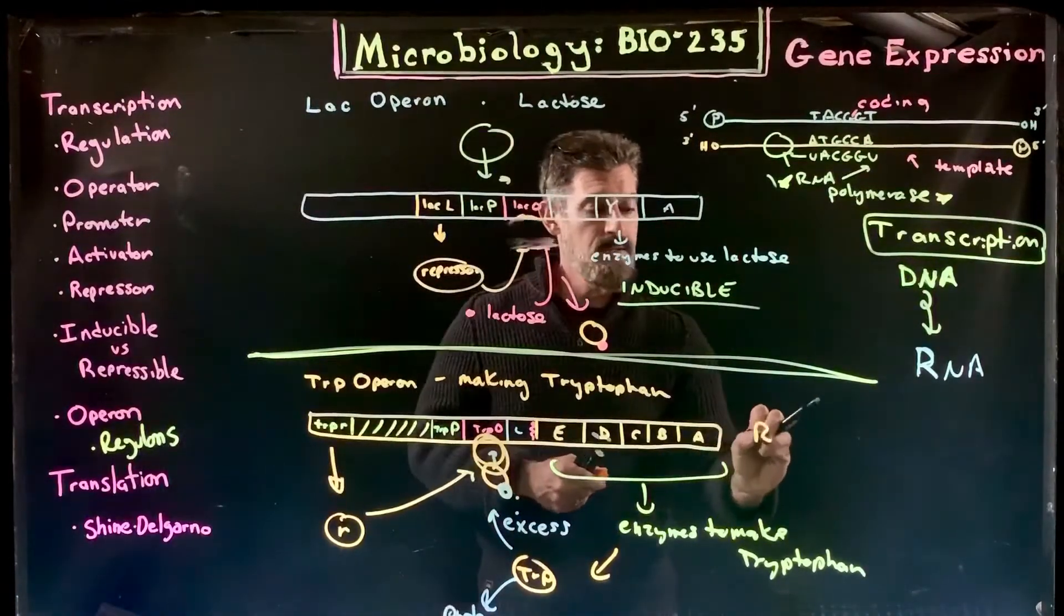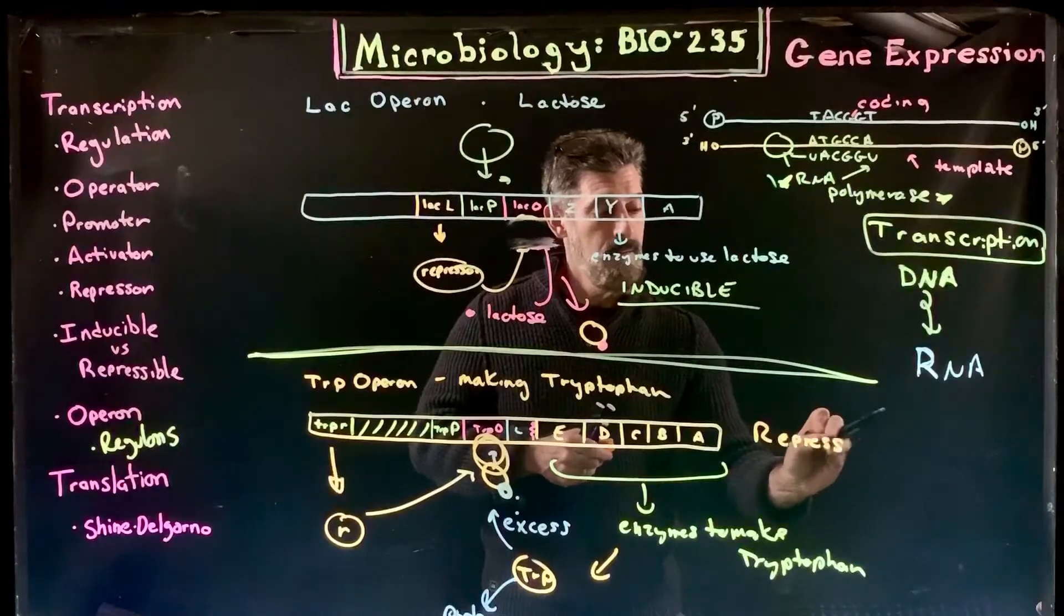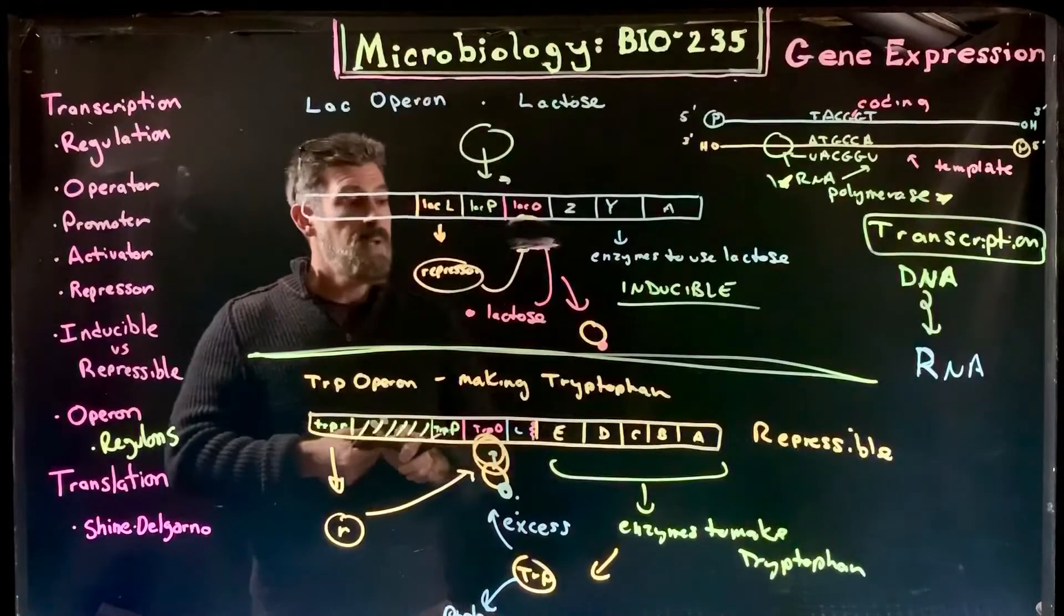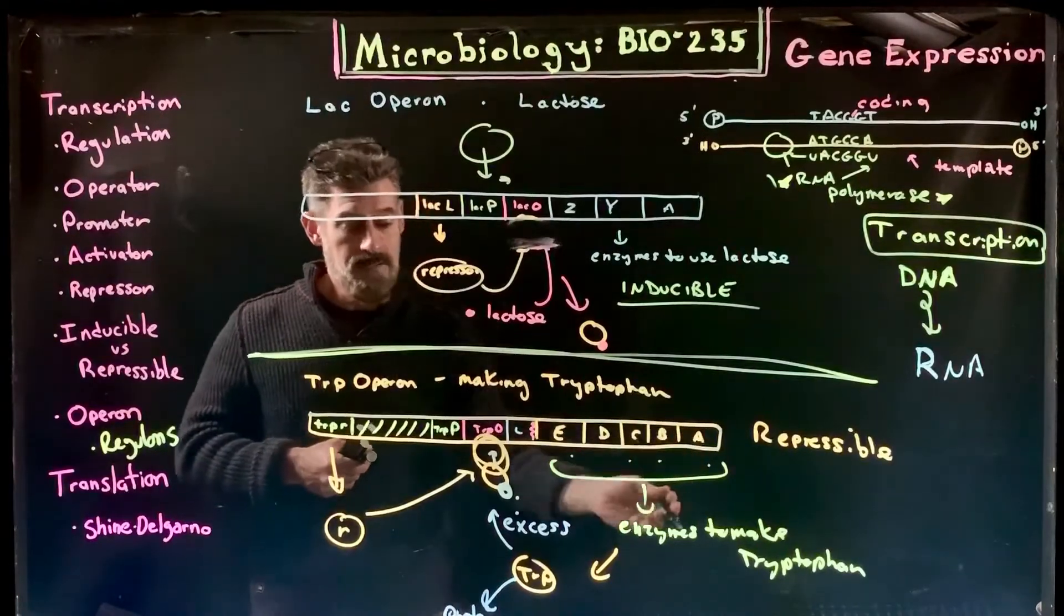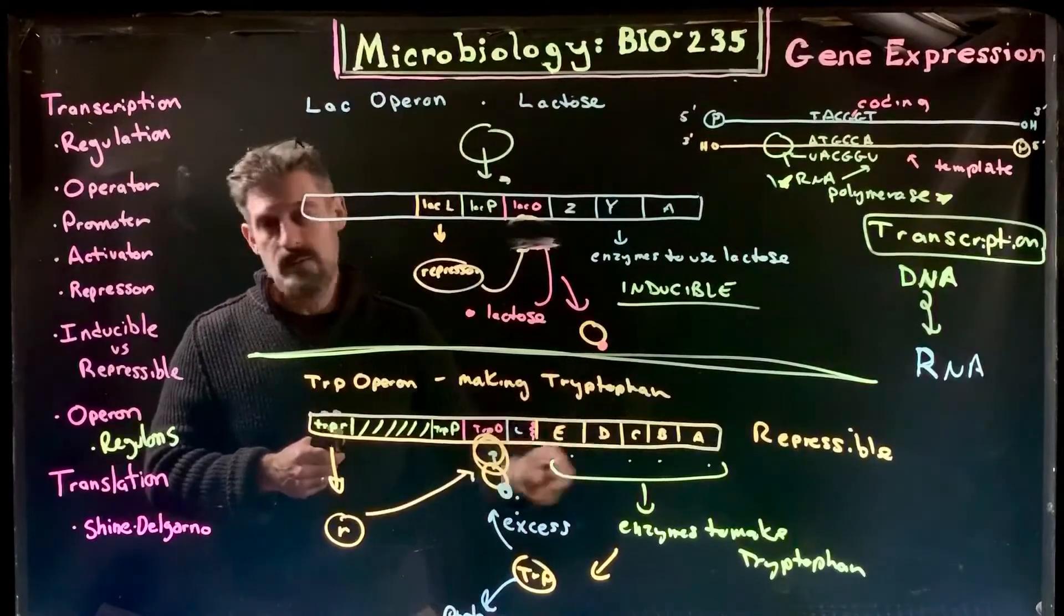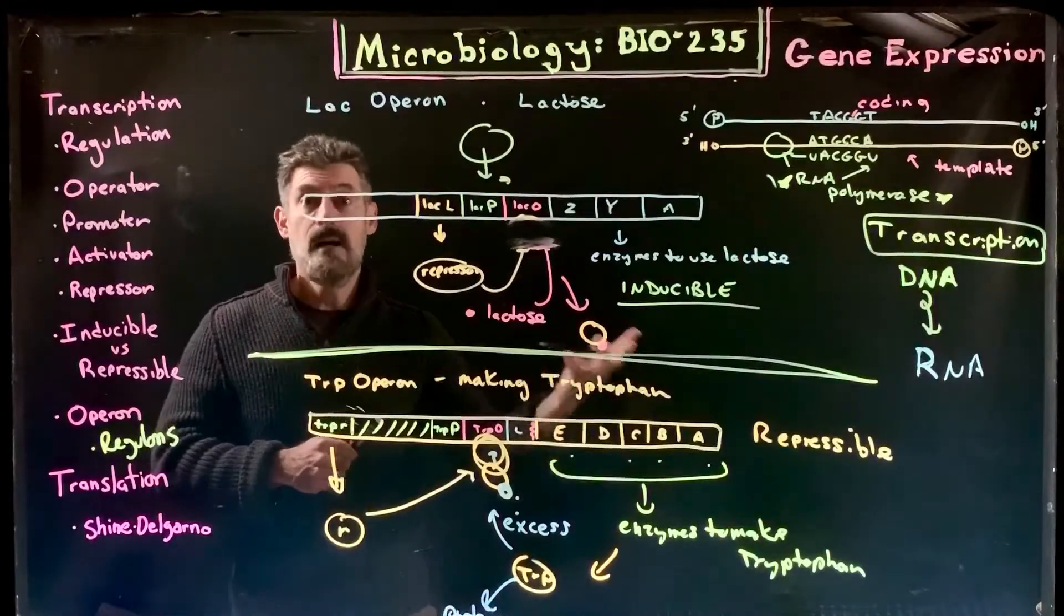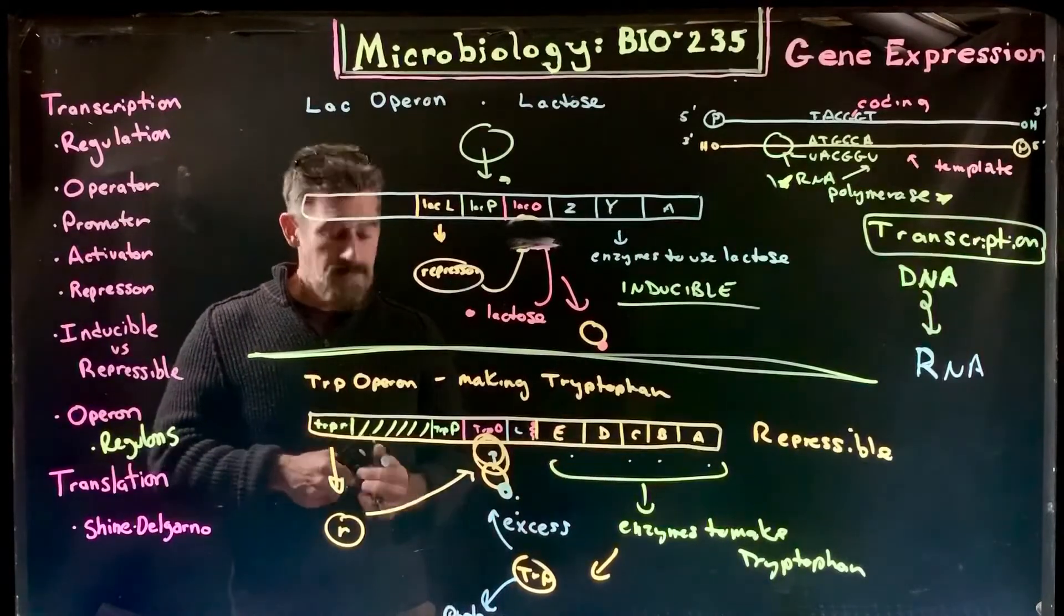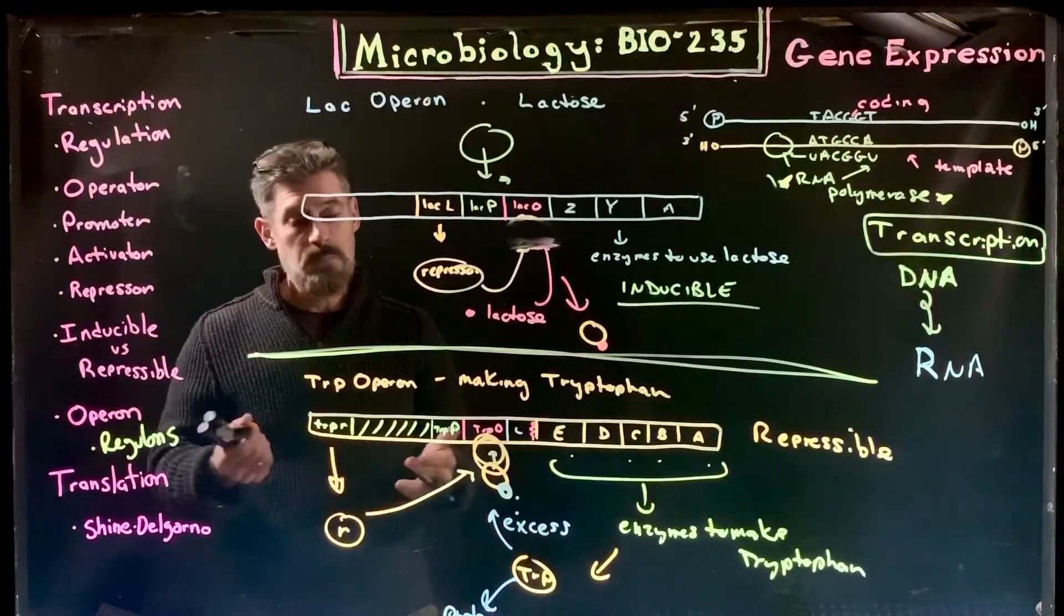This is an example of a repressible operon system. This one is typically on, usually making these enzymes—different proteins that either join together to make a bigger complex or work alone. They're all necessary as a group to make this amino acid, but if the cell doesn't need so much of it, it can shut that process down.